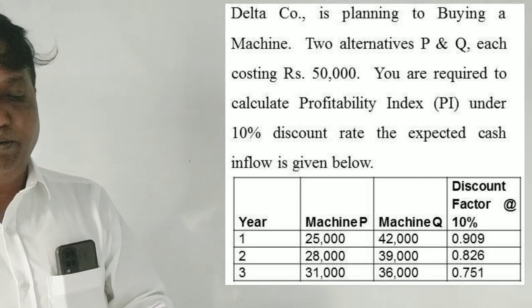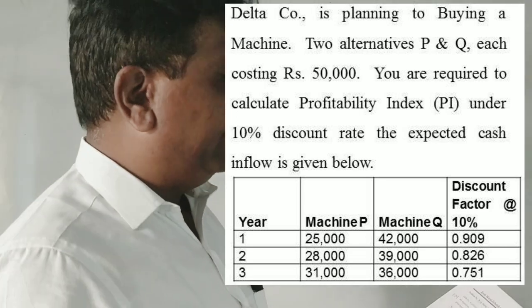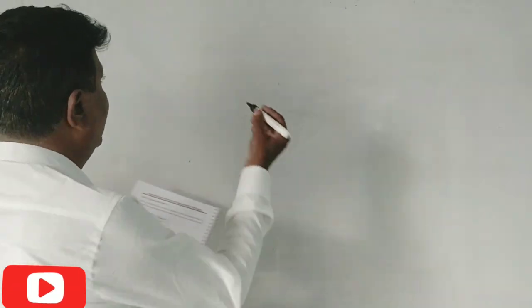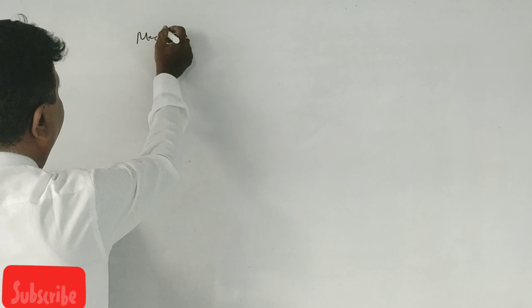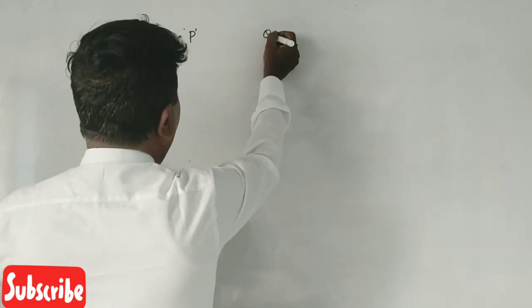So year 1, 2, 3. Machine P, Machine Q, discount factors. Company is planning to buy a machine, P and Machine Q. Okay, now.